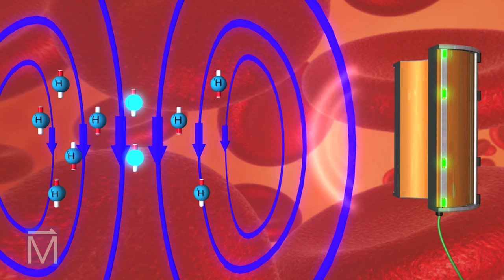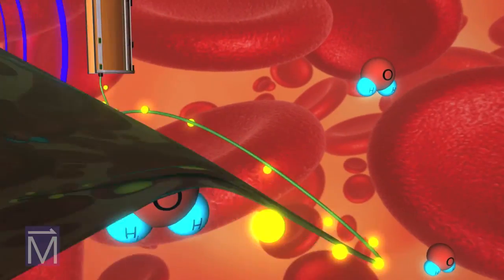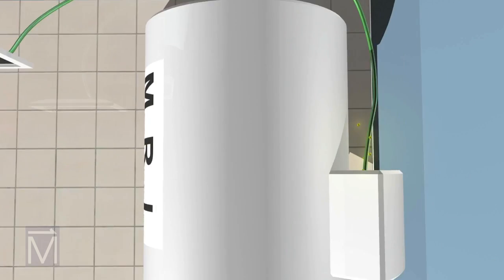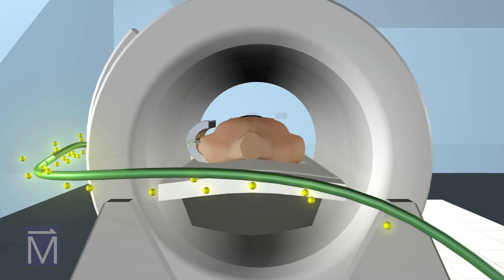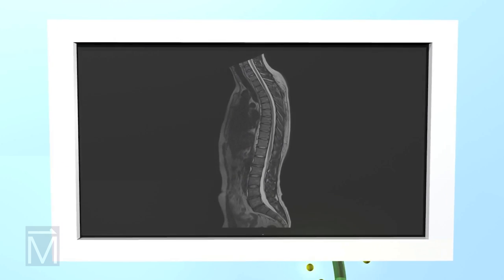Let's watch this one more time. The protons absorb the energy from the RF waves, then flip on their axes and emit the energy back to the coil. That signal gets turned into an electric current, which the scanner digitizes. The scanner processes the signal using advanced algorithms in order to produce the image.